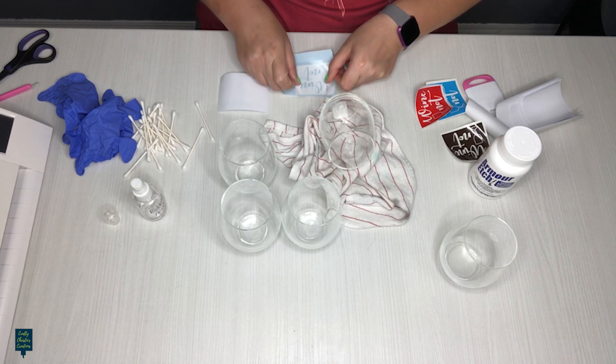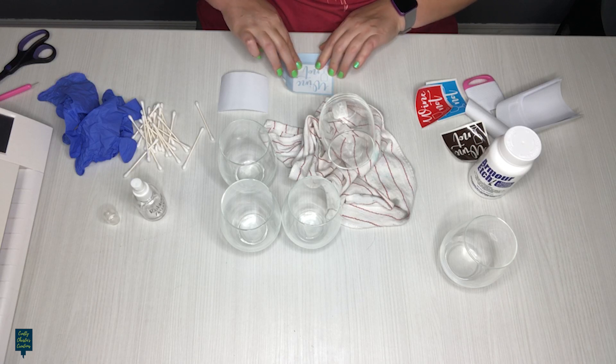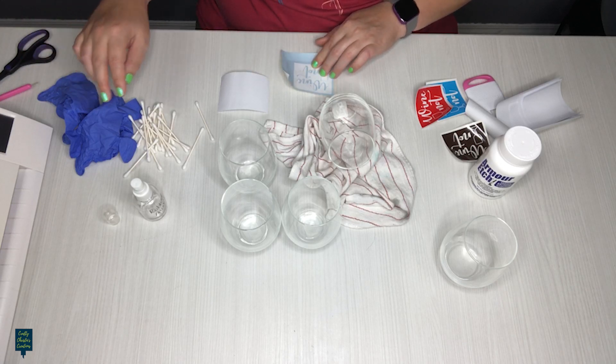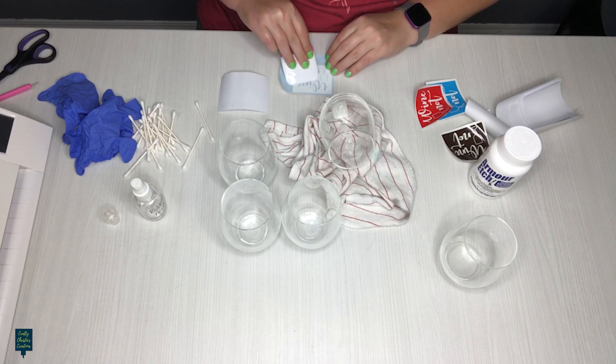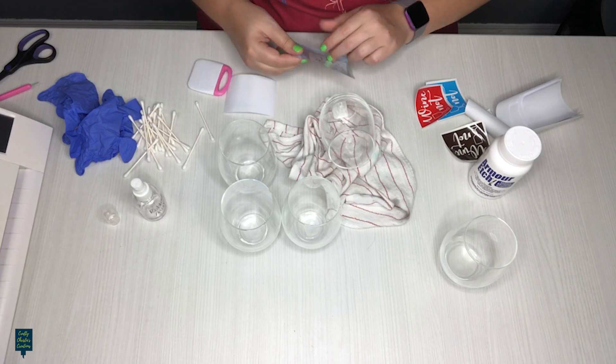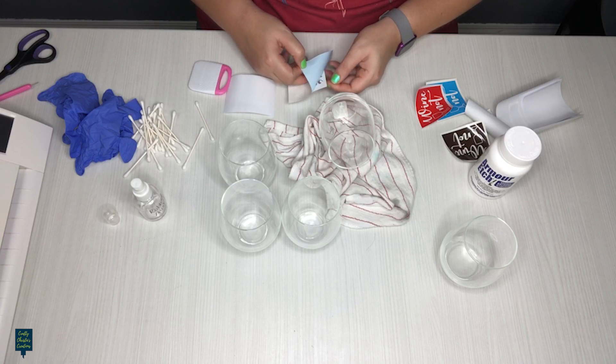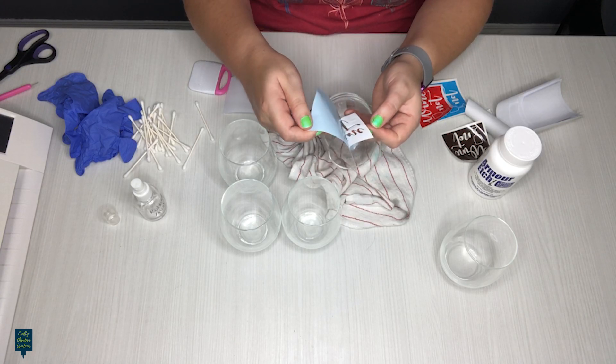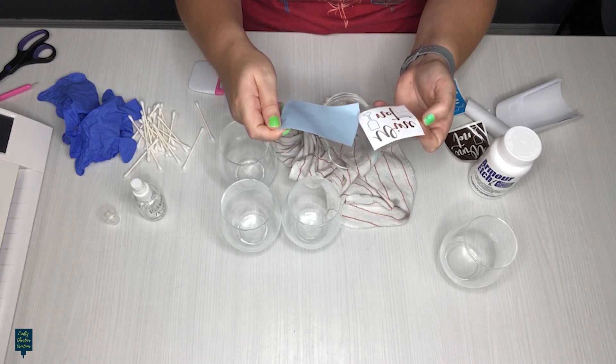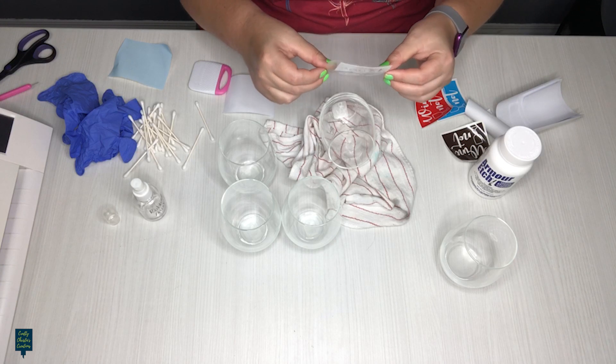This one here is the Oracal 631, which is the temporary vinyl. So we'll see how this goes. I'm just getting that on there, get that peeled off, and then we'll get that applied to the wine glass.